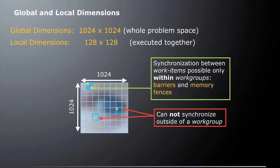Just a quick review. The global and local dimensions of a problem — let's say in this case we're going to process an image — so the global dimensions of this image would be 1024 by 1024, and that's the whole problem space because we're operating on a 1K by 1K image. Further, we've decided that the best way to execute our problem is using workgroups of 128 by 128. Those are going to be executed together. It's key to note that two work items within a workgroup can synchronize using things such as barriers and memory fences, but if we have work items in two different workgroups, we can't synchronize those two together because they're not in the same workgroup.